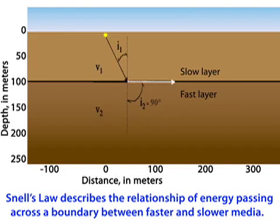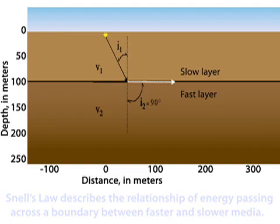At the critical angle, waves are refracted 90 degrees and travel along the boundary in the fast layer.